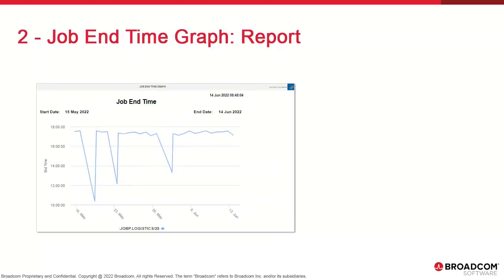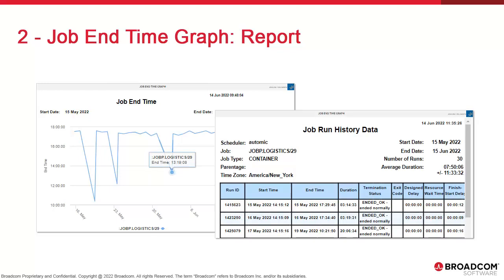The graph plots execution end times over time. In this particular instance we have a job that runs once a day, with three executions that ended sooner than normal. After investigating those specific data points, we find that they were ended manually for various reasons, prompting further investigation into who and why. You can click on any of those data points to display the job run history table, with the date, run ID, duration, and the type of delay that caused the situation. We cover this table later in this course.